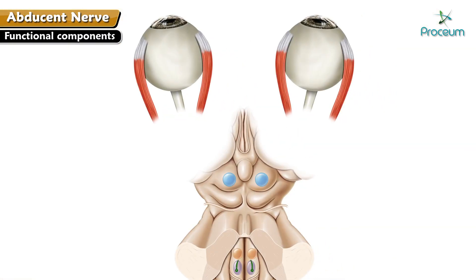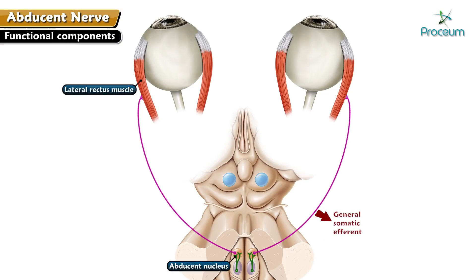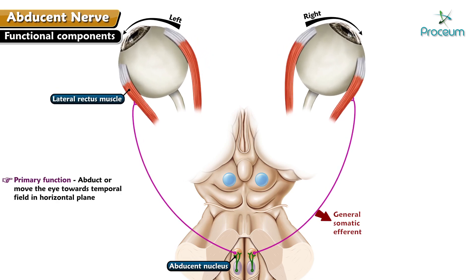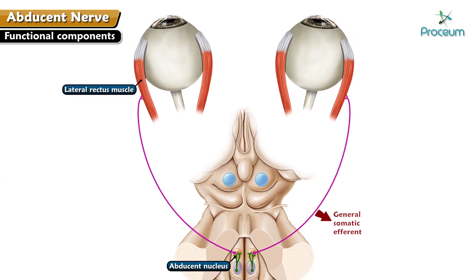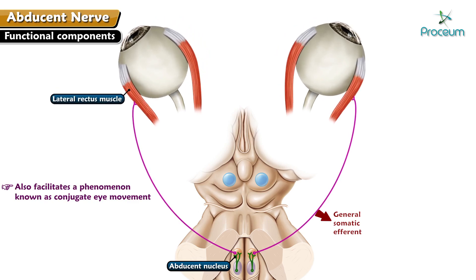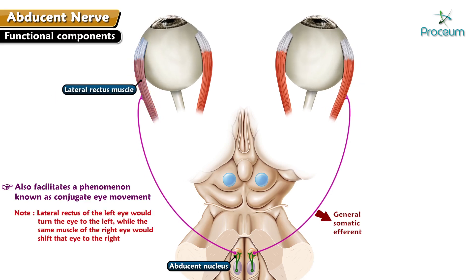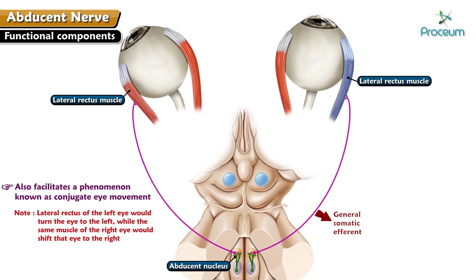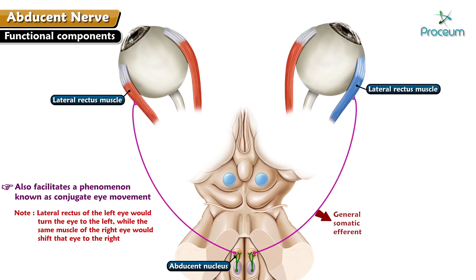Functional components. General somatic efferent fibers originate from the abducens nucleus to supply the lateral rectus muscle. Therefore, the nerve's primary function is to abduct or move the eye towards the temporal field in the horizontal plane. However, the 6th cranial nerve also facilitates a phenomenon known as conjugate eye movements. This process ensures that both eyes move in the same direction on the horizontal plane. Note that the lateral rectus of the left eye would turn the eye to the left, while the same muscle of the right eye would shift that eye to the right.